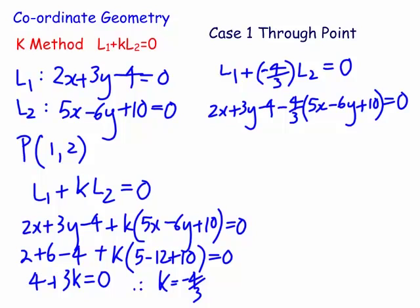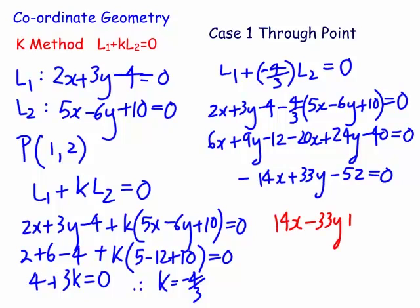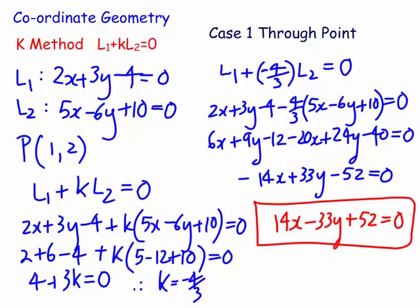Collecting all the like terms, we end up getting minus 14x plus 33y minus 52 equals zero. But remember in general form, the coefficient of x should be positive, so we multiply by minus 1, giving us 14x minus 33y plus 52 equals zero. This is the equation of the line through the intersection of line 1 and line 2, but also through the point P (1, 2).